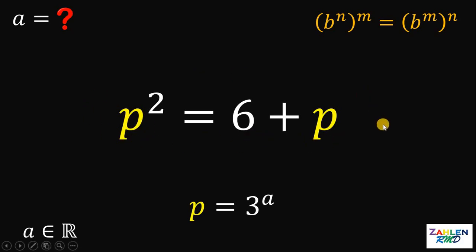We have a quadratic equation in terms of p. Also take note that since p equals 3 raised to a, p is greater than 0. Now, let's solve this quadratic equation in terms of p.